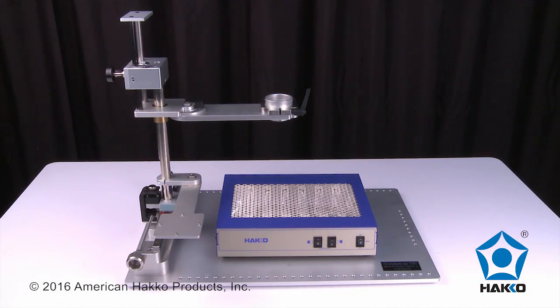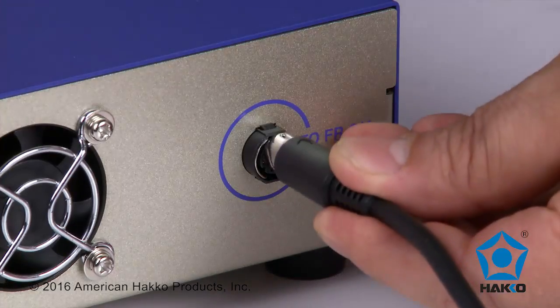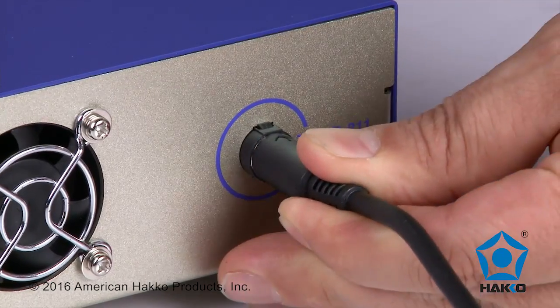Set the heater on the base plate of the HACO rework fixture and connect it to the FR811 station with the connecting cable.